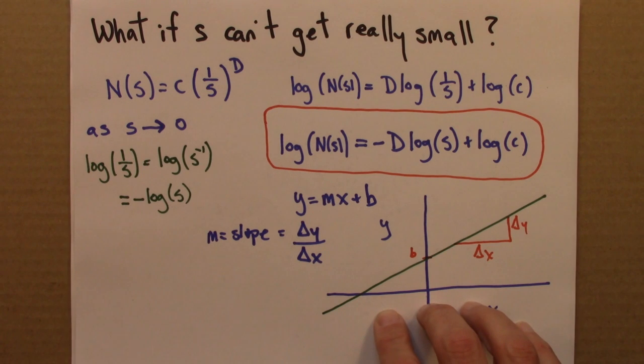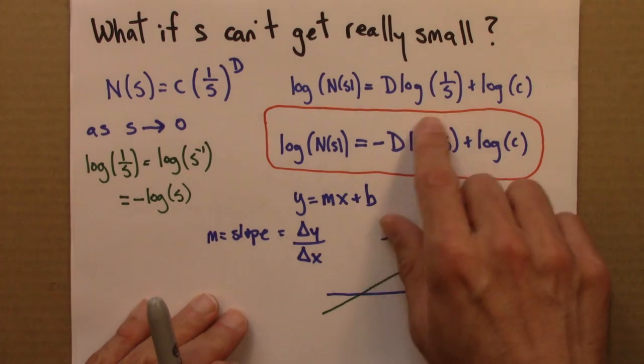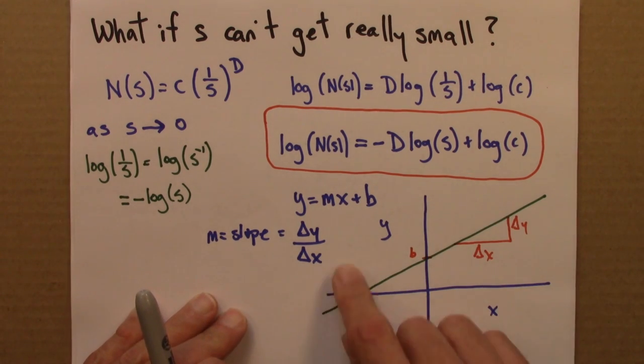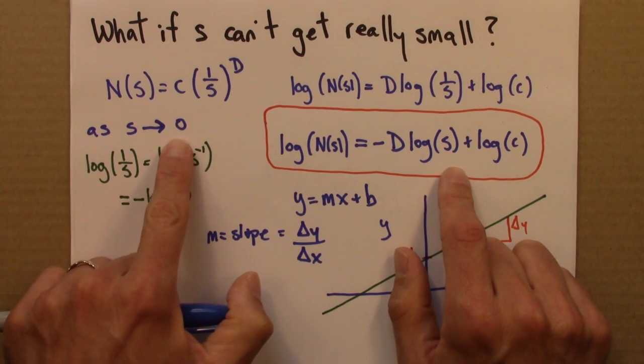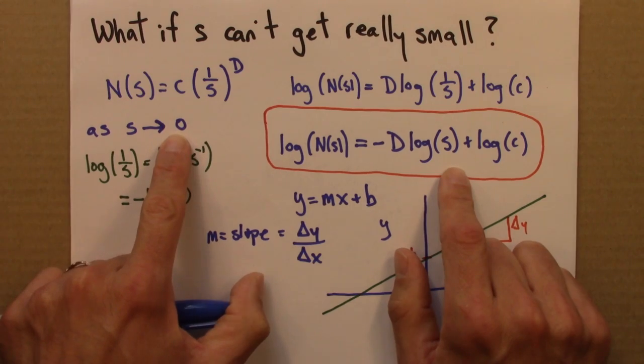So what I want to do next is illustrate this process for a square, where this will work out really nice, and then we'll illustrate this for some fractal or some other shape, and we'll see some of the subtleties associated with the fact that s can't go to zero exactly.